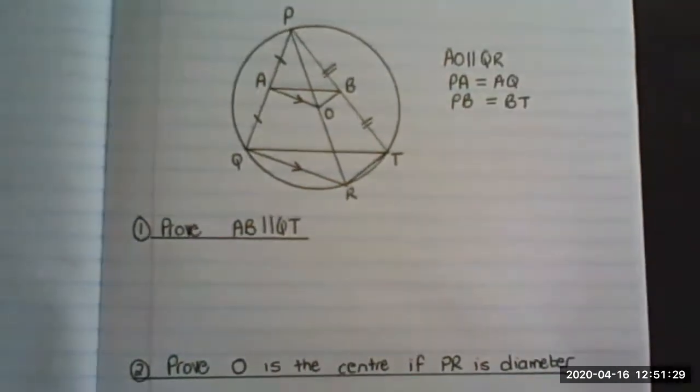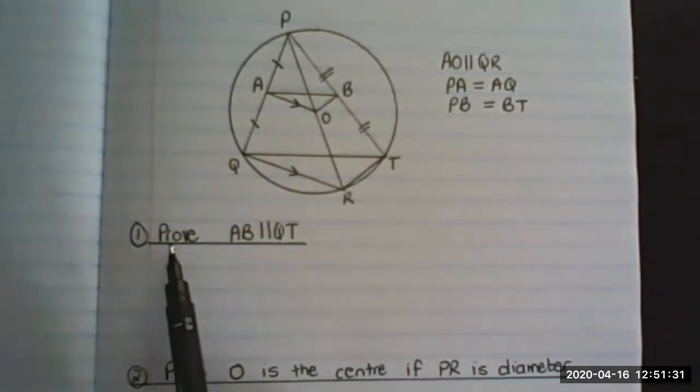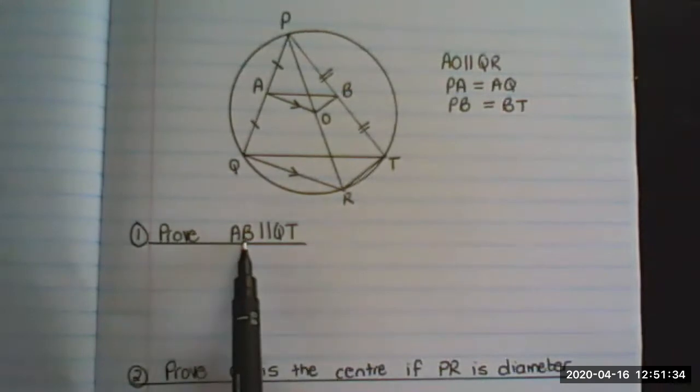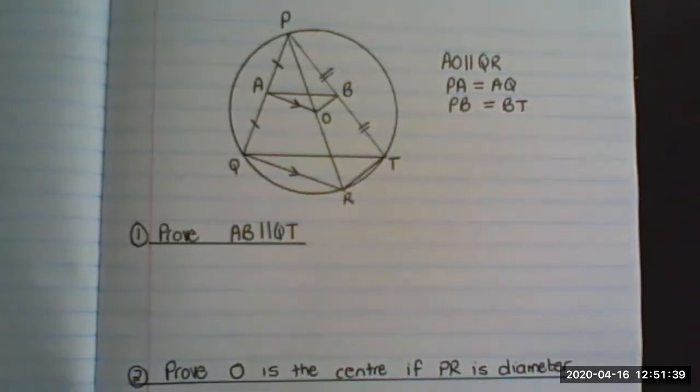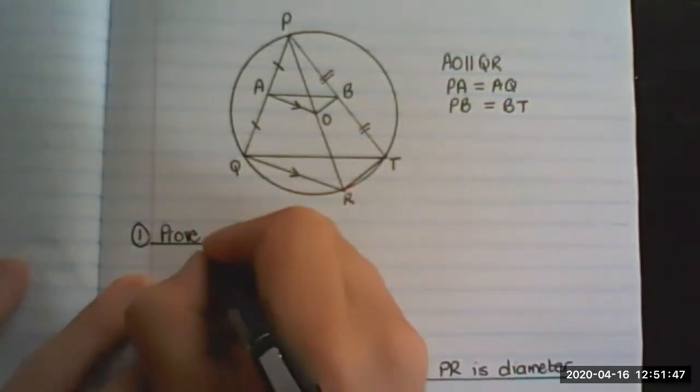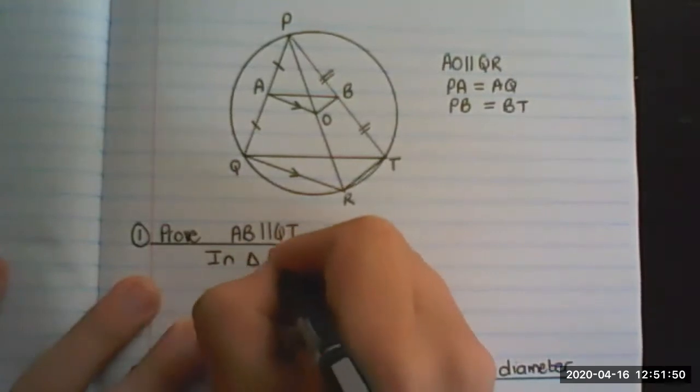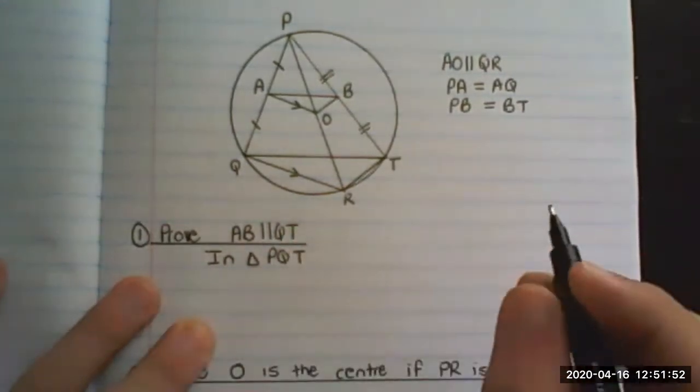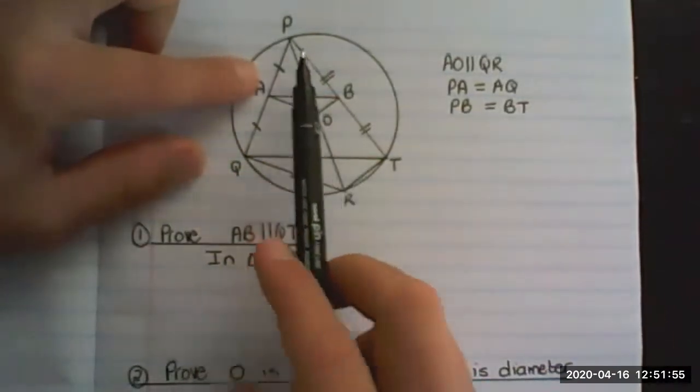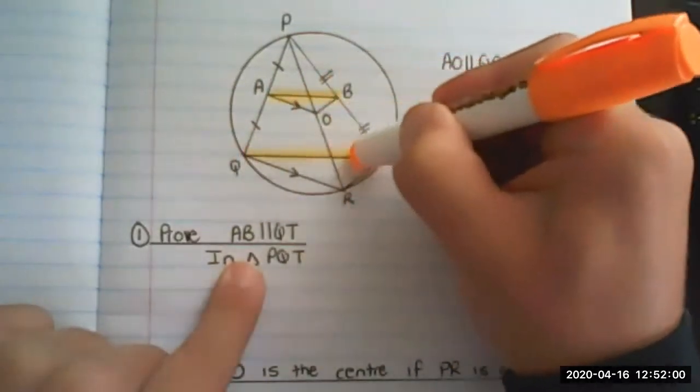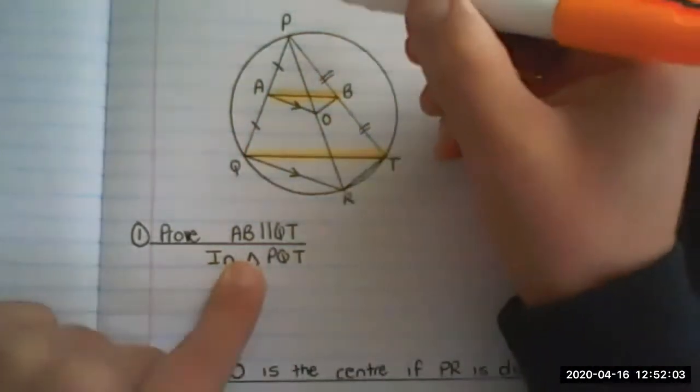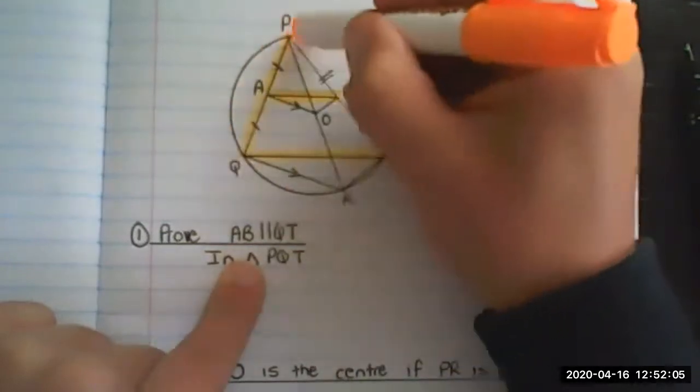So here's the first question. It says prove that AB is parallel to QT. So the way we solve it, we say in triangle PQT, now look carefully what is happening. AB is this line and QT is that line, and it forms part of this triangle.